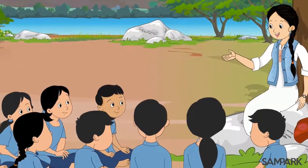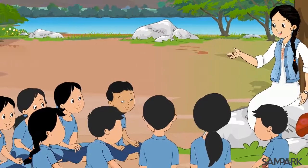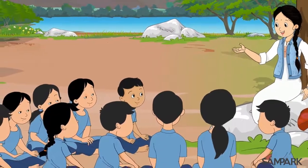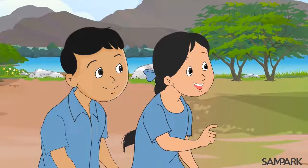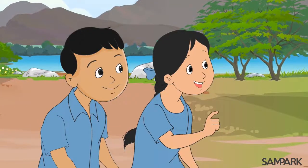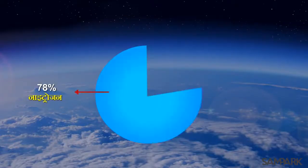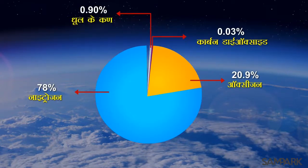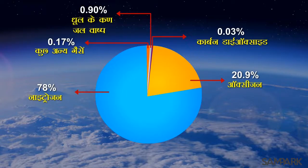तब तो तुम लोगों को ये भी याद होगा कि वायु में क्या-क्या उपस्थित होता है? हाँ दीदी, आपने बताया था कि वायु में नाइट्रोजन, ऑक्सीजन, कार्बन डायोक्साइड, धूल के कण, जलवाष्प और कुछ अन्य गैसें भी होती हैं।